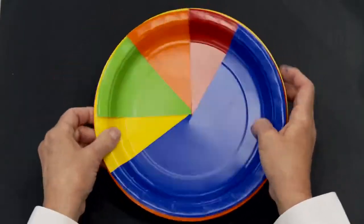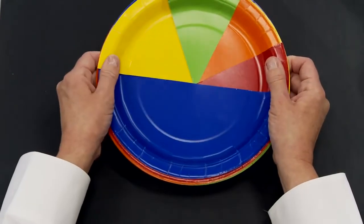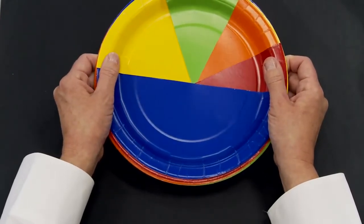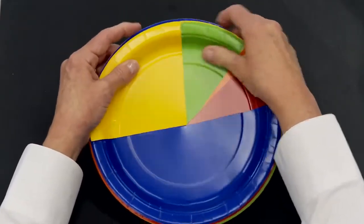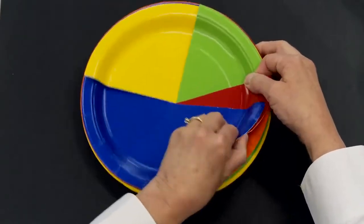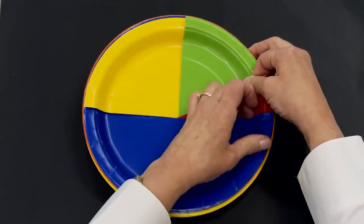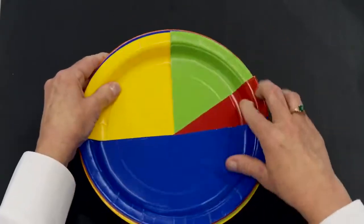So all I'm doing is manipulating those plates. So I might say, show me a half of your circle is blue. Show me a fourth is yellow. And show me another fourth is green.